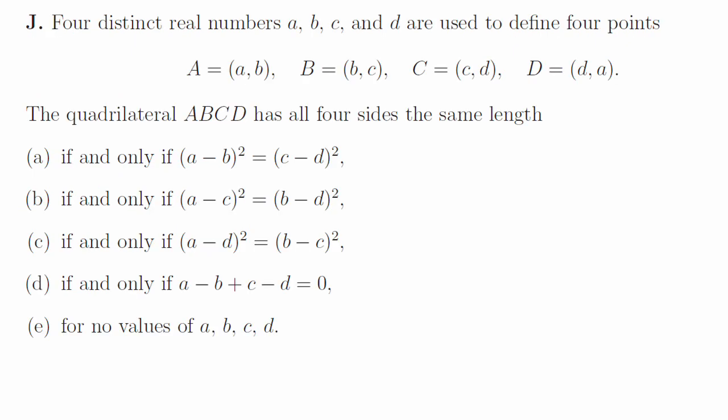1j. You can write down expressions for all of the side lengths and set pairs of them equal to each other. If you square those and rearrange and use the difference of two squares, you can factorise each expression into a product of two brackets. Exploring all the cases, there's only one way for all of these things to be equal, that's for a minus b plus c minus d to be equal to zero, which is option d.